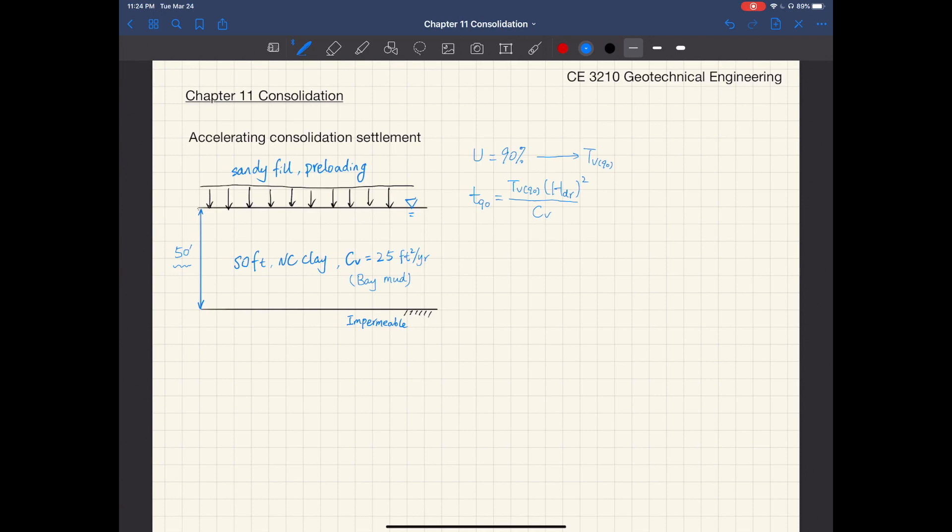With preloading, you typically want to achieve average degree of consolidation of 90 percent or above. So for U of 90 percent, the time factor T sub V is 0.848, taken from table 11.7, Terzaghi's solution.